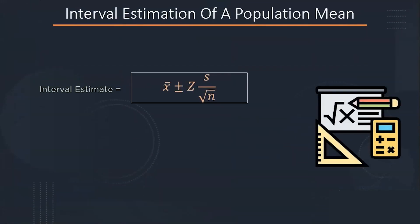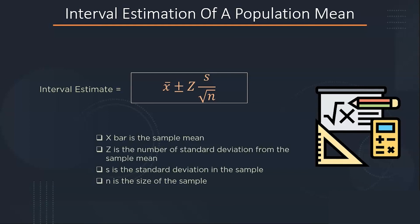To calculate the interval estimate we have the formula x bar plus minus z times s divided by root n, where x bar is the sample mean, z is the number of standard deviations from the sample mean, s is the standard deviation and n is the size of the sample. Now that we have discussed the interval estimate and the margin of error, let's understand all this concept with the help of an example.